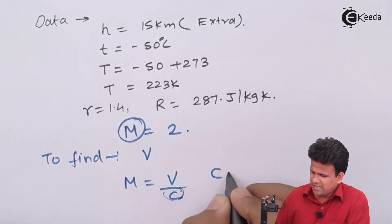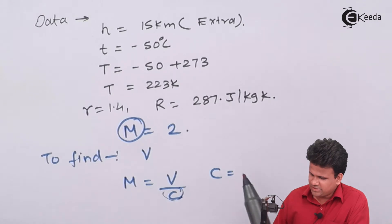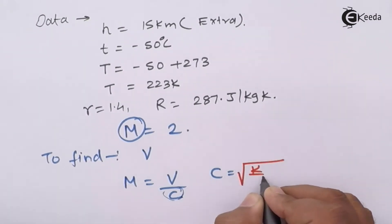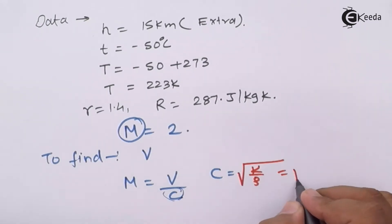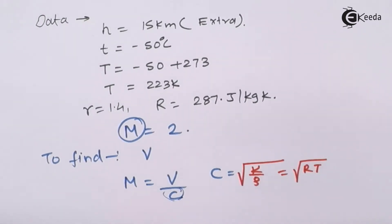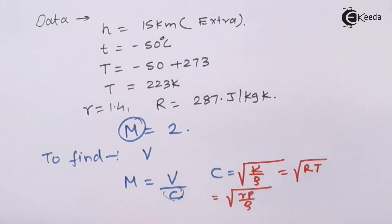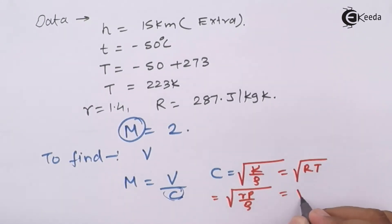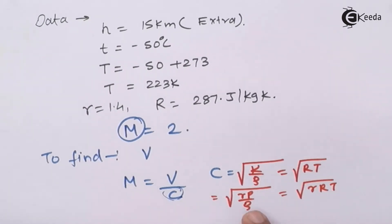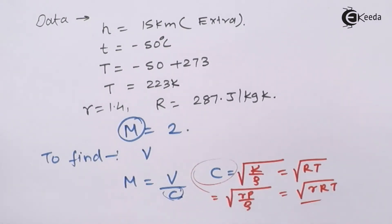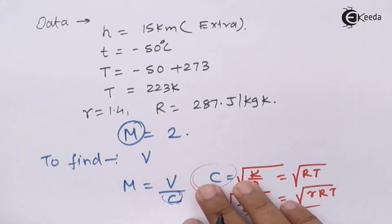For calculating the velocity of sound, we have four formulas: C equals square root of K by rho, which cannot be used; square root of RT for an isothermal process; gamma P by rho, which also cannot be used; or square root of gamma RT, which can be used for an adiabatic process. We will use this last formula to calculate the velocity of sound.